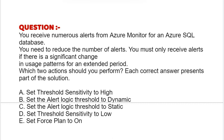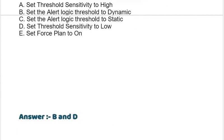Option A: Set threshold sensitivity to High. Option B: Set the alert logic threshold to Dynamic. Option C: Set the alert logic threshold to Static. Option D: Set threshold sensitivity to Low. Option E: Set Force Plan to On. The correct answer is Option B and Option D.